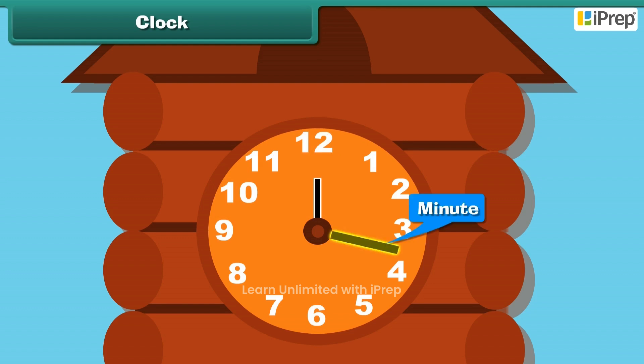The longer hand is the minute hand, whereas the shorter hand is the hour hand. The hour hand tells about the time in hours, while the minute hand tells about the time in minutes.